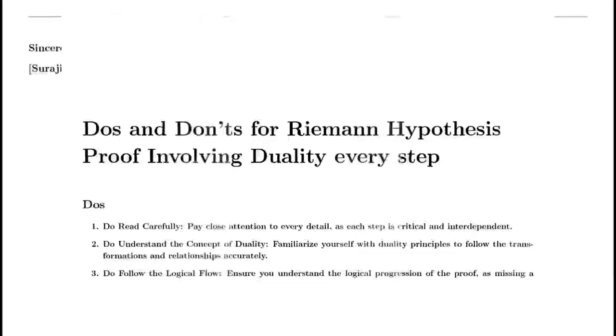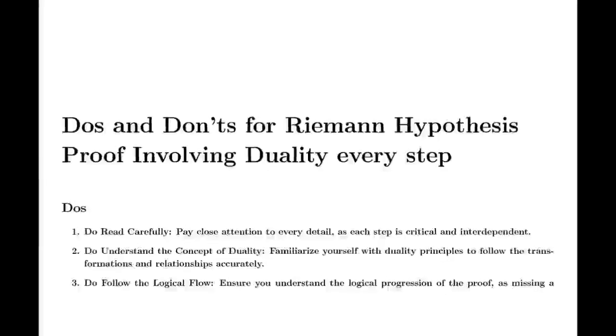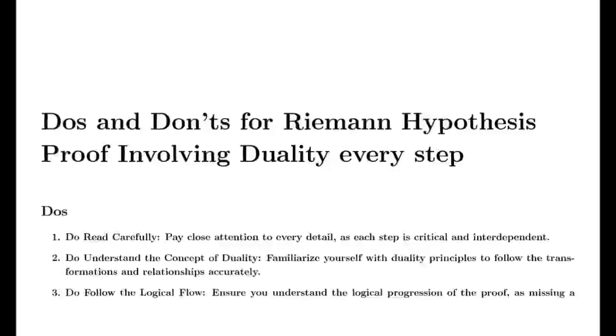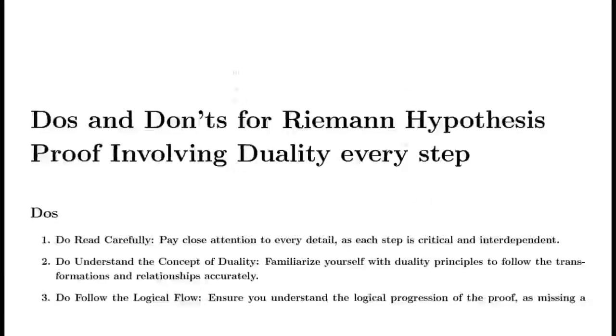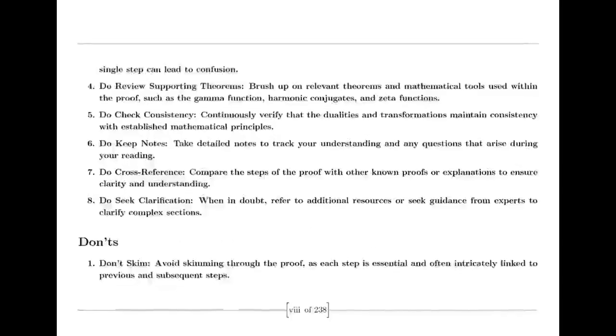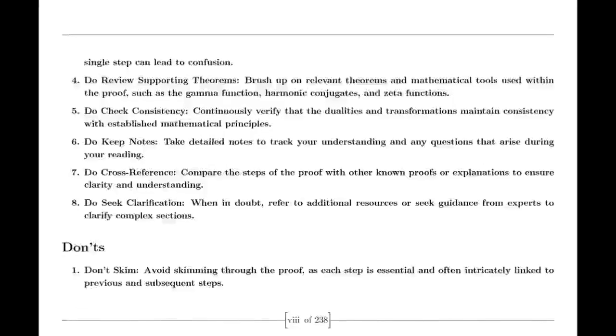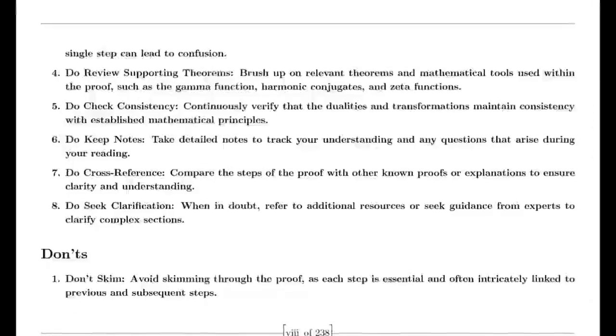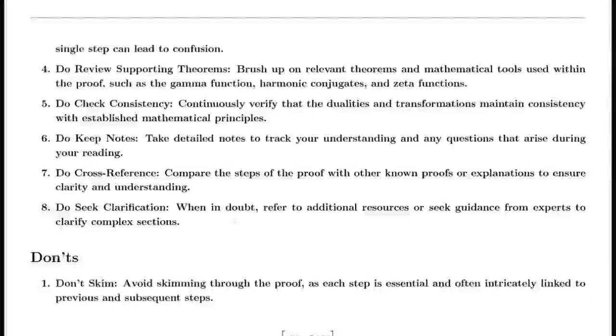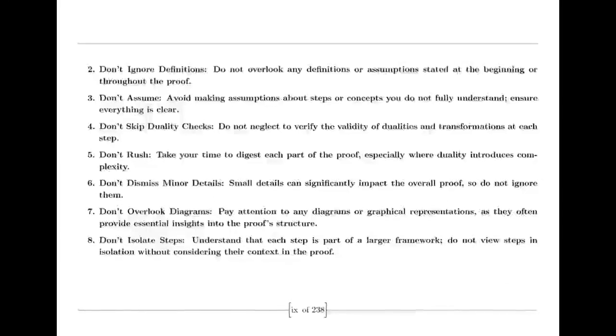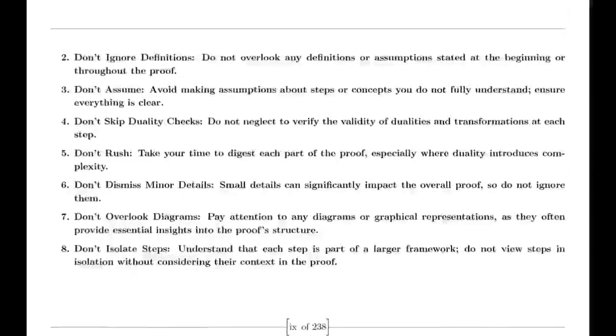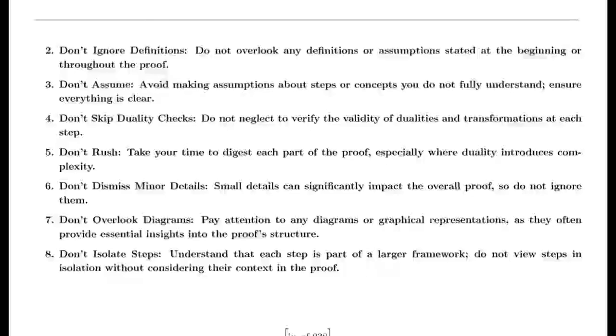Euler also tackled the Basel Problem, concerned with finding the exact sum of the reciprocals of the squares of the integers. By examining the sine function and its product representation, Euler derived a formula showing that this sum equals π²/6. This result was a significant achievement in mathematics, highlighting Euler's ability to uncover connections between different mathematical concepts.